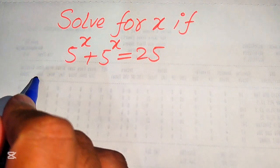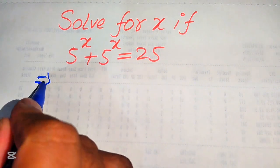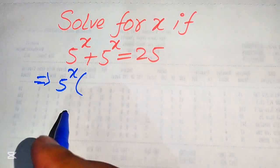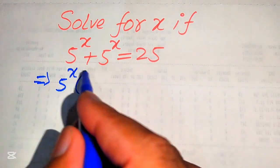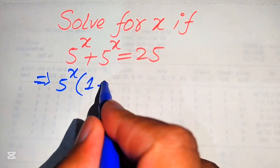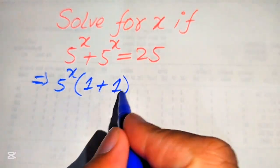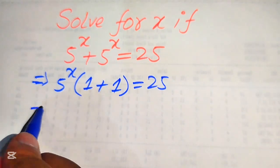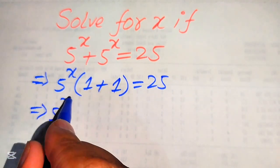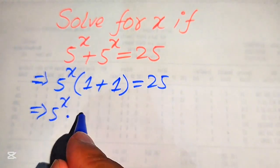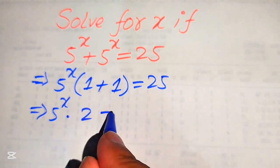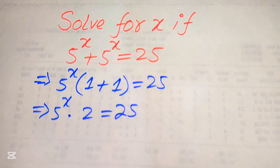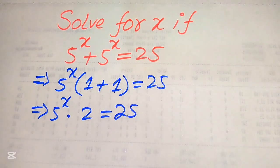First we focus on the left hand side and we take common 5 to the power of x. After taking common 5 to the power of x, we get the remaining values are 1 plus 1, so we have 5 to the power of x into 1 plus 1, which equals 2, and this whole expression is equals to 25.